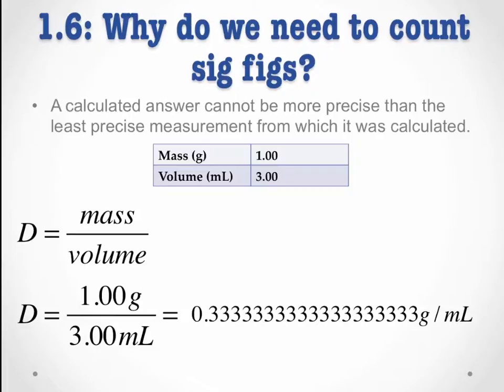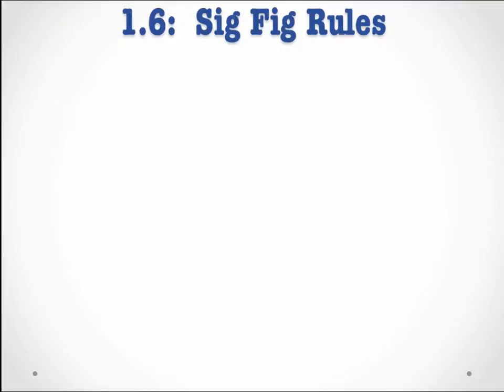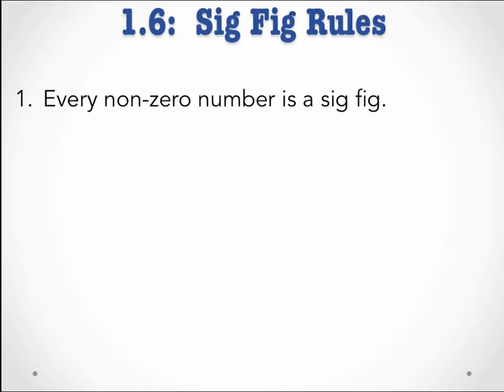So we need to know some rules for how to determine how many significant figures should be in our calculated answer. The first of these rules is really straightforward: every non-zero number in a measurement is a sig fig. Therefore, all of the digits 1 through 9 are always sig figs. For example, in the measurement 123 centimeters, all three digits are non-zero, therefore all three digits are sig figs, giving this measurement 3 sig figs.